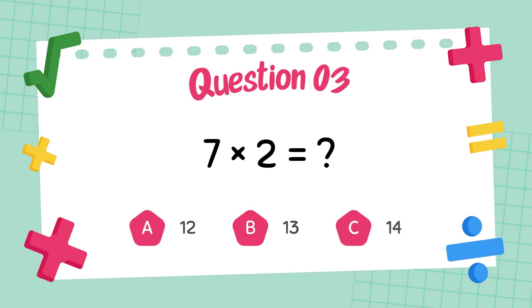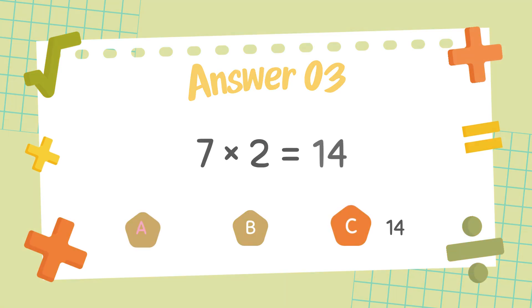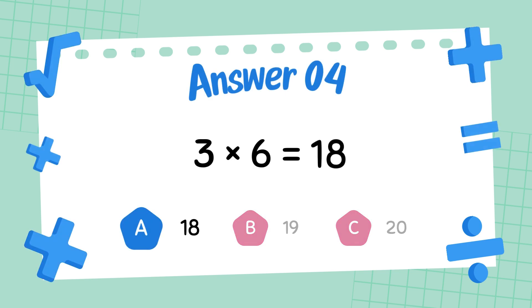What is 7 times 2? The answer is 14. What is 3 times 6? The answer is 18.